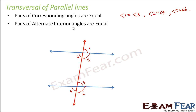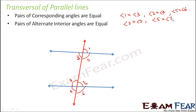Second, pairs of alternate interior angles are also equal. In this case, angle 2 and angle 3 are alternate interior angles, so angle 2 equals angle 3. Similarly, the alternate interior angle for angle 5 — let us call it angle 7 — gives us angle 5 equals angle 7.